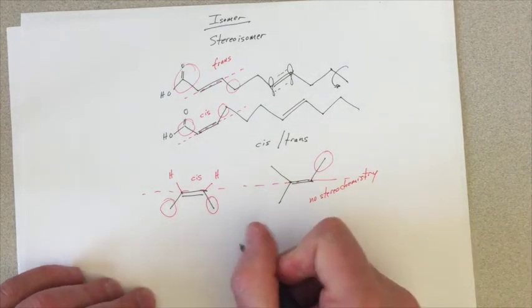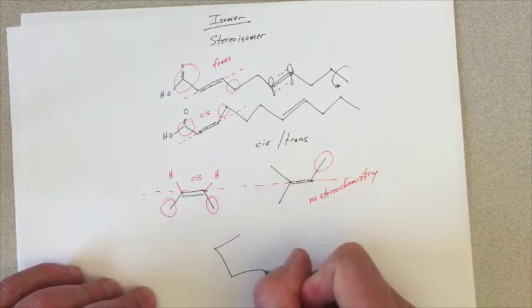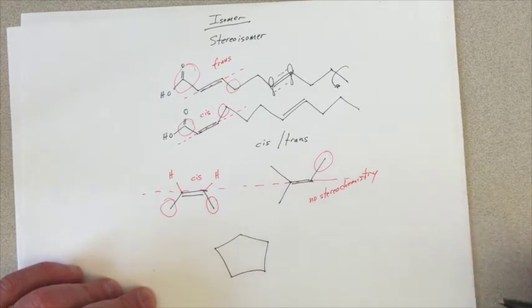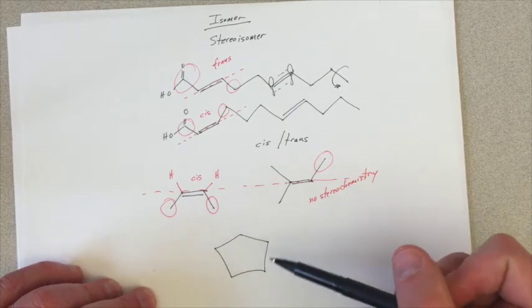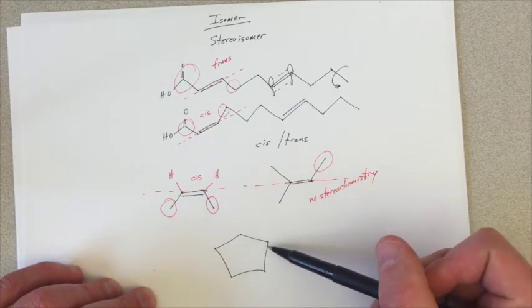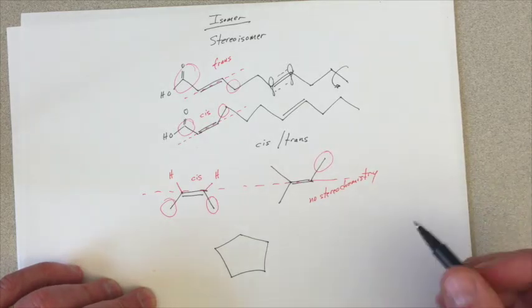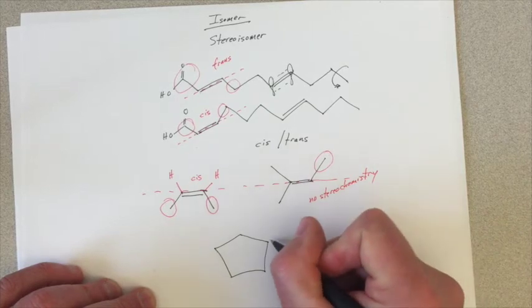Now we can also use this cis trans nomenclature when we have bonds, carbon-carbon bonds, that cannot freely rotate because they're locked up in a ring. In order to rotate any of these carbon-carbon bonds 180 degrees, we'd have to break the ring.